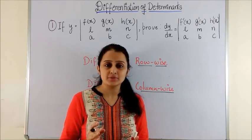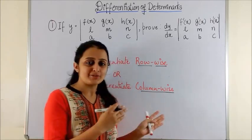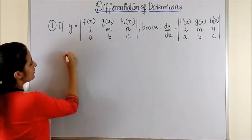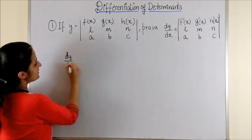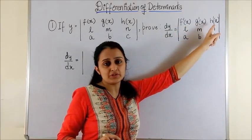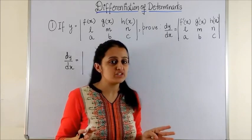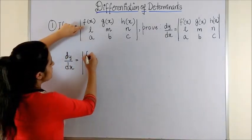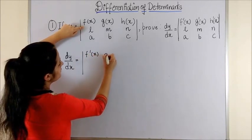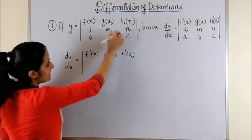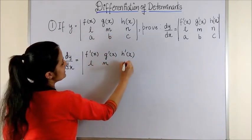So it is very similar to your product rule. Let's try and apply it. Taking y, now if I have to get my derivative, this means we see the derivative of the first row. That means we would differentiate this row. So, differentiating the first row and keeping the remaining two as they were.